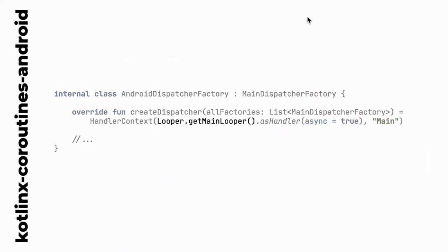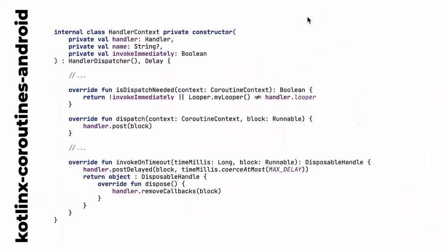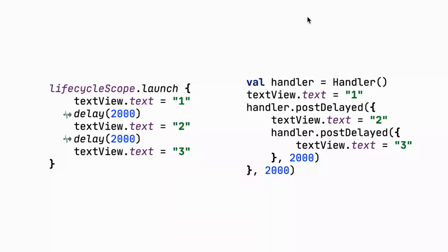Looking at the internals of the main dispatcher, it's created using standard Android concepts like the main looper, Handler, post, and postDelayed — methods available on Android since the very beginning. So this code that seems magical is under the hood just a Handler with postDelayed. Coroutines are primarily a great way to avoid callbacks, because even though the code is asynchronous under the hood, it reads like synchronous code.